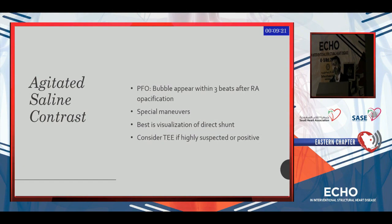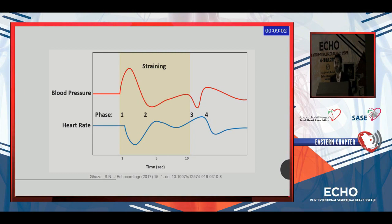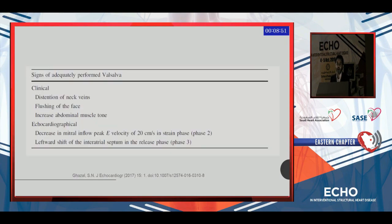Patients who cannot perform Valsalva have a high false-negative rate of up to 19 percent, compared with people who can perform an adequate Valsalva, who have a false-negative rate of 9 percent. To have an adequate Valsalva we need good training to start with, and we are interested in the release phase. For PFO assessment, the only way to confirm an adequate Valsalva or other maneuver is to see the septum shift leftward. The ribs are not important in PFO assessment.